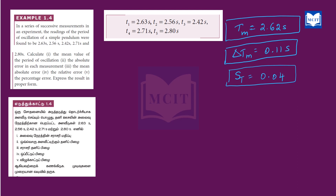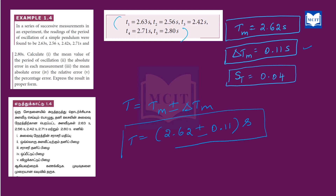Finally, we express the result in proper form. The time period of oscillation of the simple pendulum is t equal to tm plus or minus delta tm, that is t equal to 2.62 plus or minus 0.11 seconds.